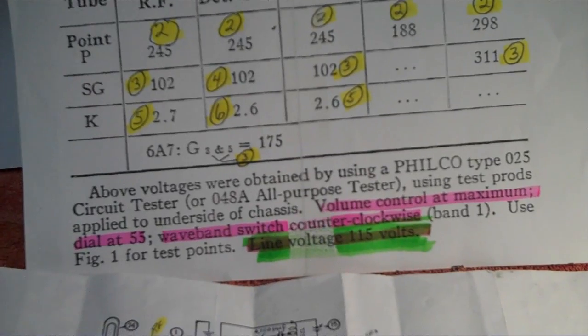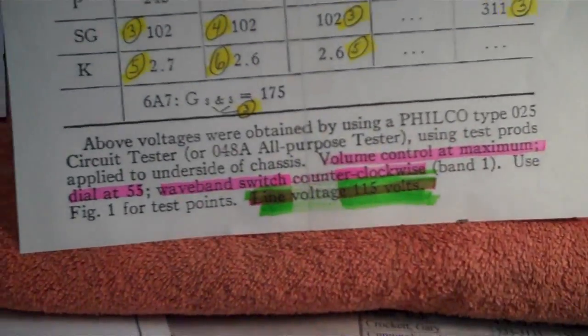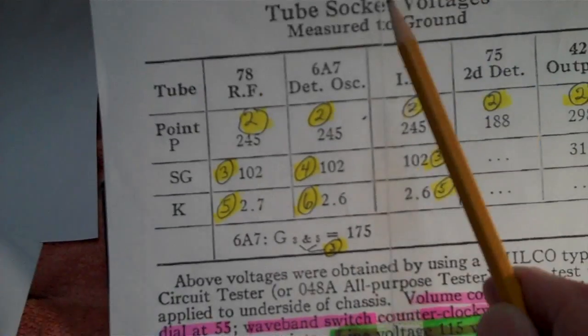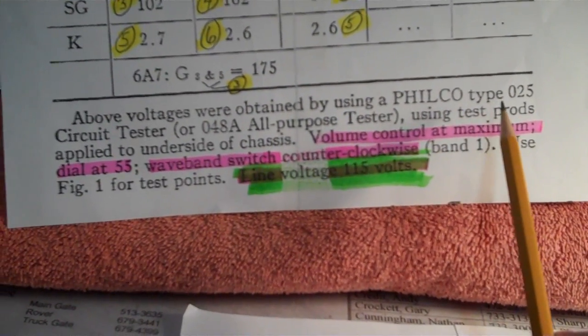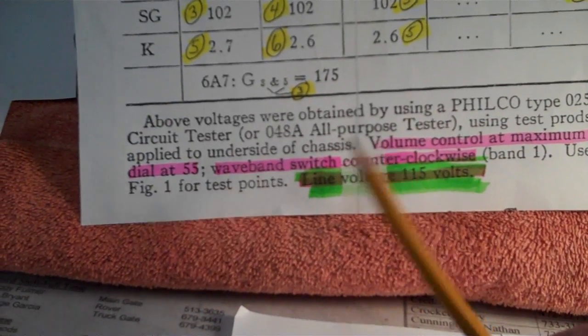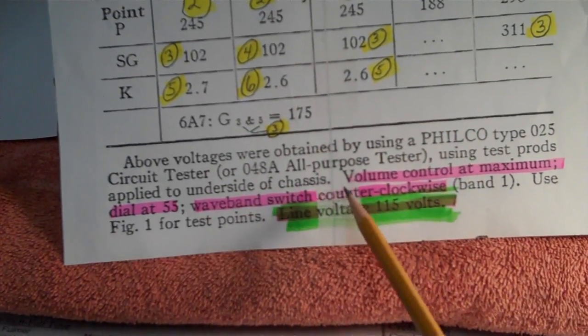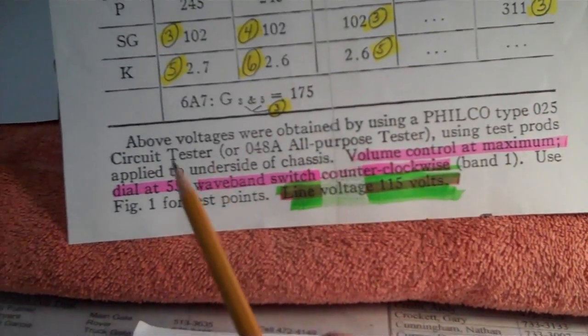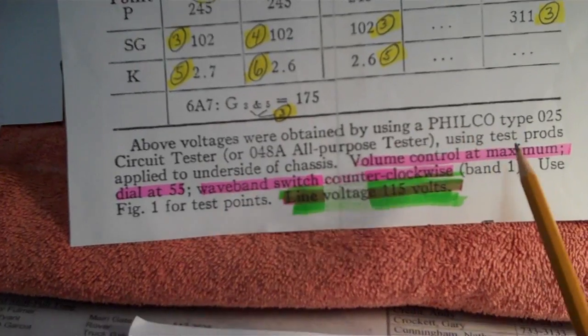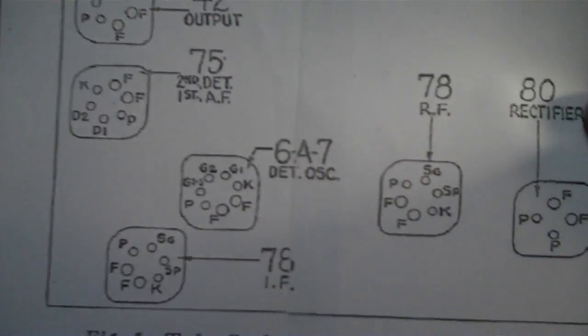Okay, the last thing we need to do before we start crawling under the chassis and poking here and there is we read the bottom part. We're pretty much done with all this. And down here at the bottom it says that they used the Philco type 025 circuit tester when they did these voltage checks. God, I just threw five of those out last week. I can't believe it. I'm going to have to use my digital multimeter now. Anyway, it says you apply the test probes to the underside of the chassis. Now that's nice to know too. And the volume control needs to be at maximum. The dial has to be set to 55. And the wave band switch counterclockwise all the way.